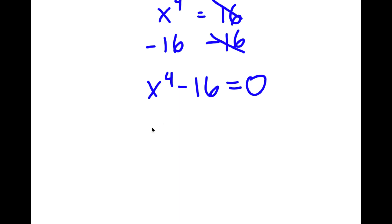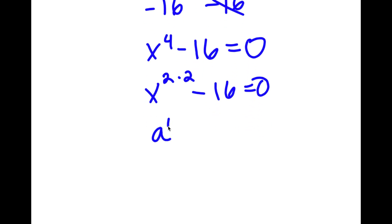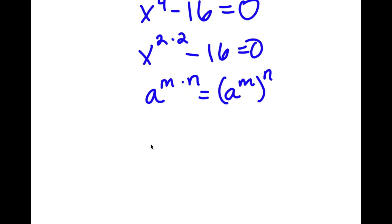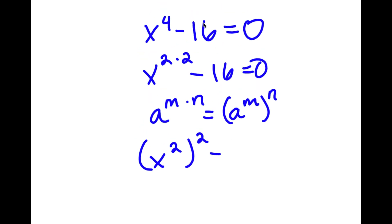Now, x to the power of 4, I'm going to write as x to the power of 2 times 2. And if I have something in the form a to the power of m times n, this is equal to a to the power of m to the power of n. So x to the power of 2 times 2, I can rewrite that as x squared to the power of 2, minus 16, which I'm going to rewrite as 4 squared. This is equal to 0.